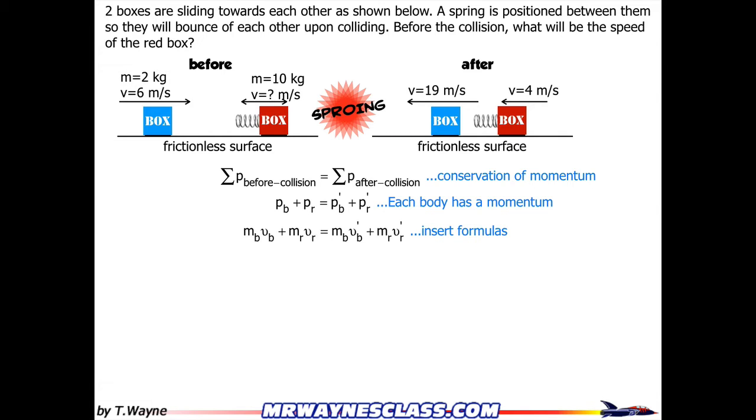So I would write this next step down as my next step in the process. Mass of the blue box times the velocity of the blue box plus mass of the red box times the velocity of the red box equals mass of the blue box times velocity of the blue box after the collision, plus the mass of the red box times the velocity of the red box after the collision.